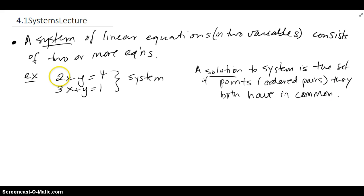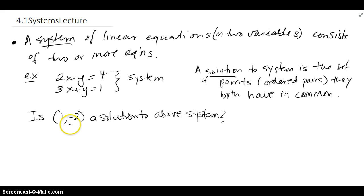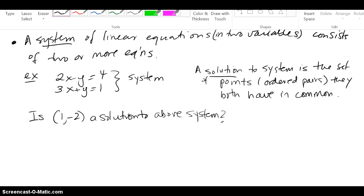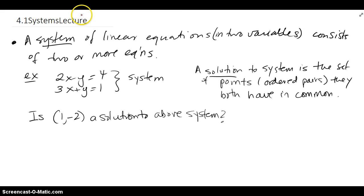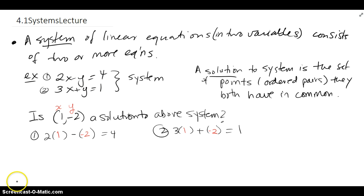In other words, whatever works for this equation must also work for this equation, and then that will be a solution to the system. So when we're given an ordered pair to check, the first value will be x, the second will be y, and I'll have to plug it into the first equation and the second equation. If it is to be a solution, it must work for both of them.